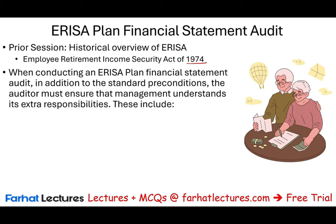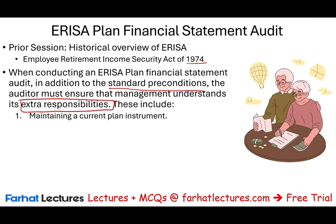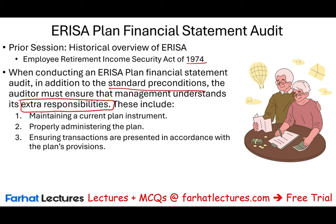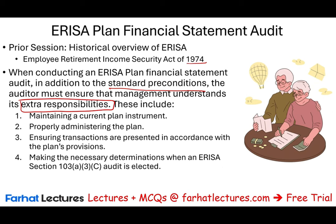When conducting an ERISA audit, in addition to the standard preconditions, the auditor must ensure that management understands its extra responsibilities. In this session we will discuss those extra responsibilities: maintaining a current plan instrument, properly administering the plan, ensuring transactions are presented in accordance with the plan's provisions, making the necessary determination when an ERISA Section 103(a)(3)(C) audit is elected, and Form 5500 reporting requirements.